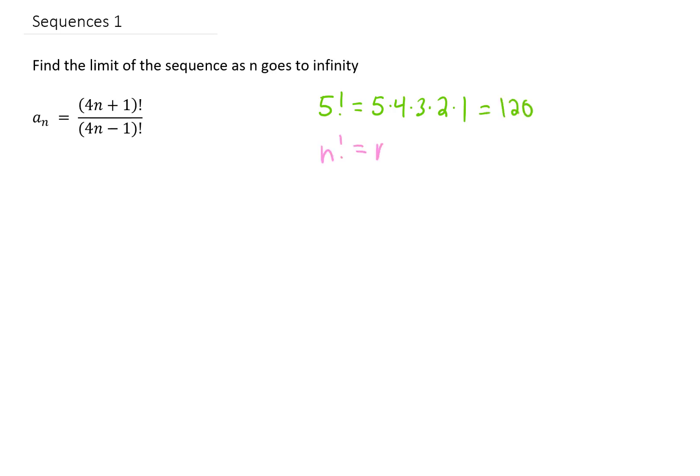We could write n factorial as n times n minus 1 times n minus 2, all the way until you get down to 2 times 1.